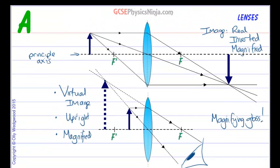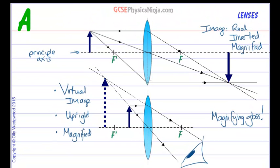So those are the two cases you need to understand for a convex or converging lens. Where the object is further away than the principal focus, you get a real, inverted and magnified image. And if the object is closer than the principal focus, then you get a virtual image formed on the same side as the object, at least it looks like that, and it's upright and it's magnified.